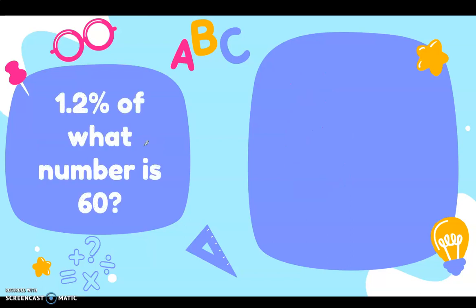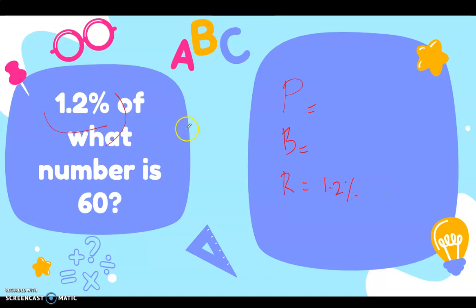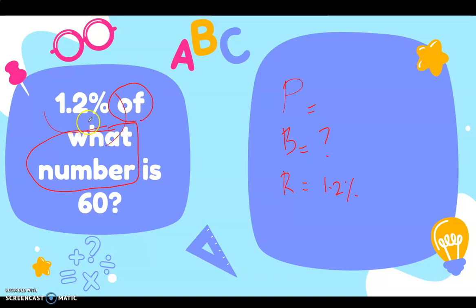Next: 1.2 percent of what number is 60? Let's write P, B, and R. The rate is already obvious — we have the percent symbol, so the rate is 1.2 percent. There is a word 'of' and we don't know the number before it, so the missing is the base. And 60 — '1.2 percent of what number is 60' — 60 is our percentage.